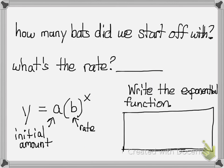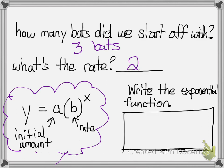How many bats did we start off with? We start off with three bats. What is the rate? Well, we said it keeps doubling every week, so that means the rate is two. Looking at this formula right here, your initial amount represents your a and your rate goes in parentheses. So when I write my function, it'd be y equals my initial amount, which was three, since it's doubling — two to the power of x. And that's it!